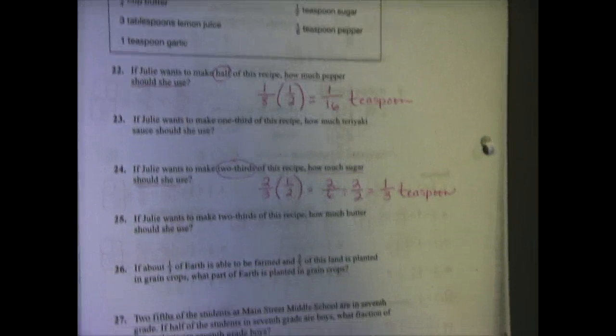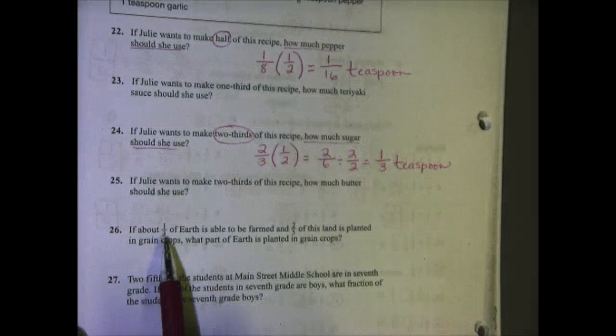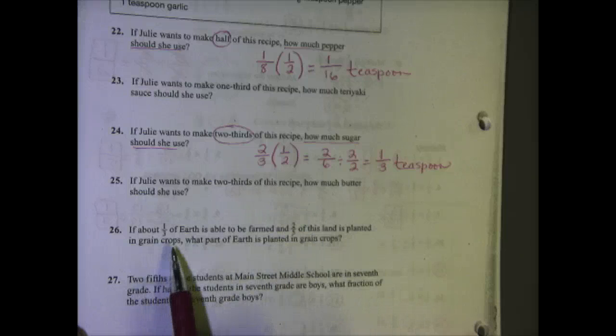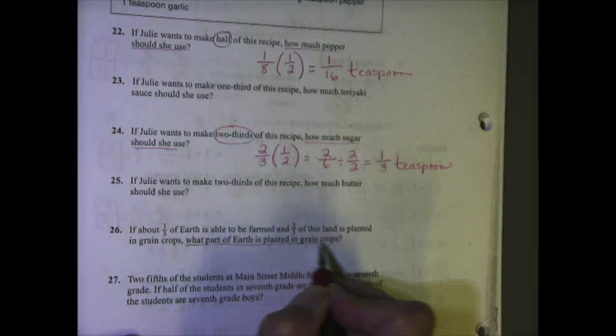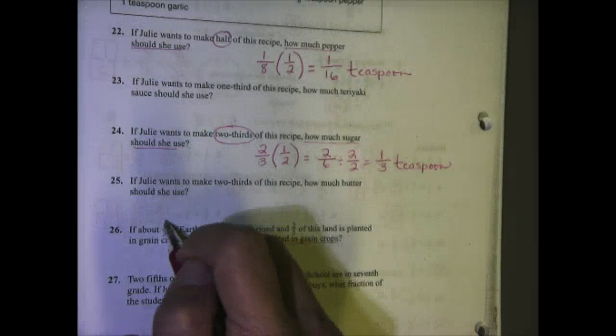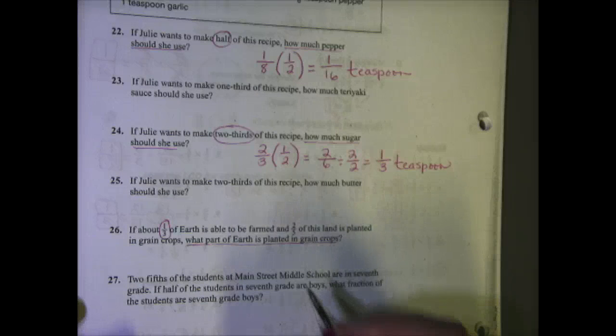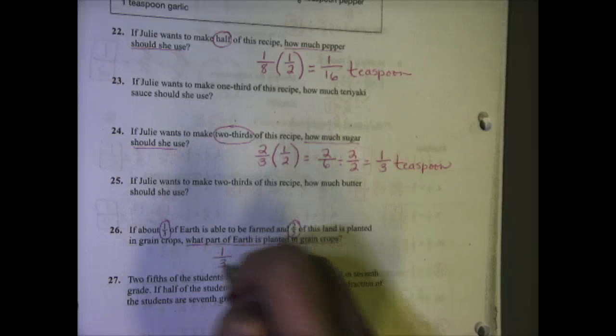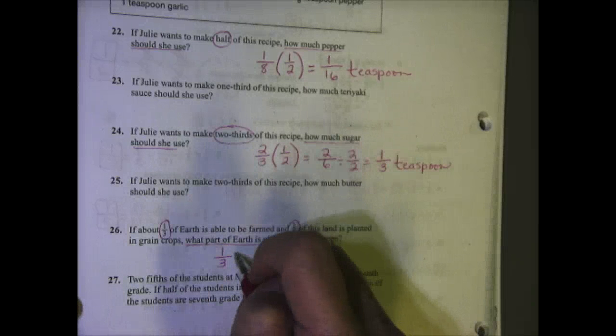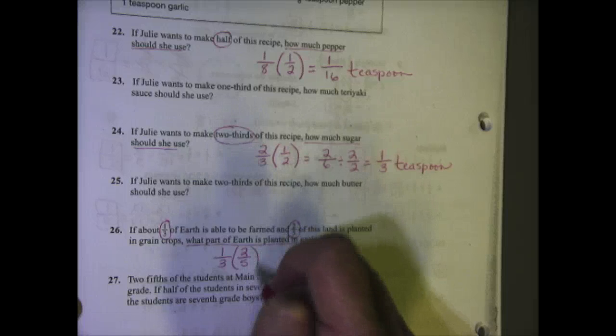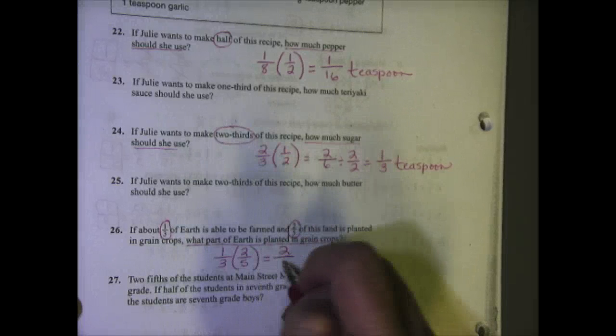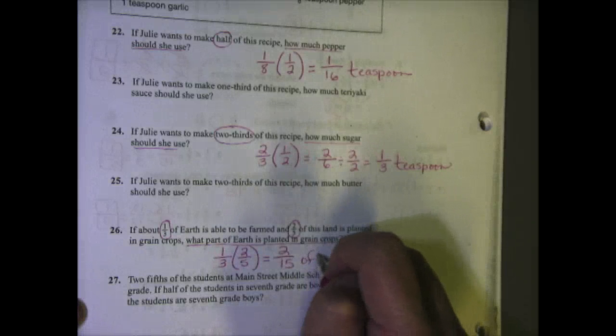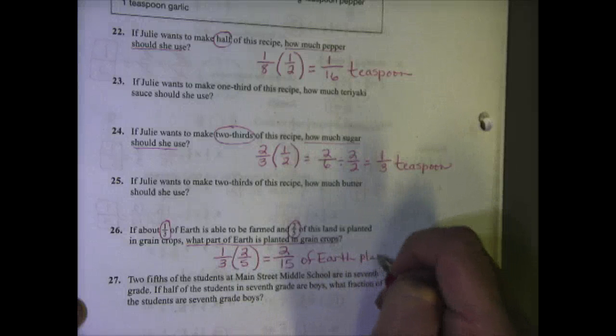Let's take a look at number 26. It says if about 1/3 of earth is able to be farmed and 2/5 of this land is planted in grain crops, what part of earth is planted in grain crops? So we said 1/3 of earth is able to be farmed, 2/5 is planted in grain crops. So we're going to figure out how much is planted in grain crops. 1/3 times 2/5 equals 1 times 2 is 2 over 3 times 5 is 15. So 2/15 of earth is planted in grain crops.